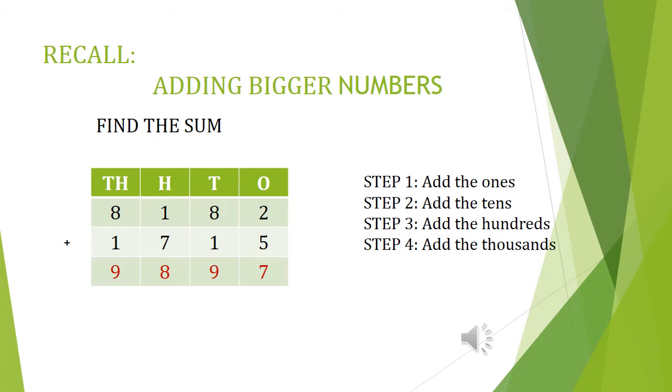We are going to add 8182 with 1715. Our first step is to arrange the numbers in the place value chart. Step 1, we need to add the number of digits in the ones place. We have 2 and 5, so 2 plus 5 gives you 7. Moving on to step 2, we have to add the number of digits in the tens place. We have 8 and 1, so 8 plus 1 gives you 9.